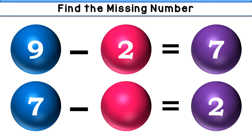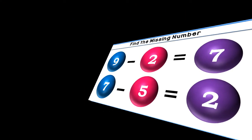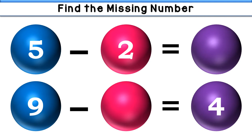The correct answer is 5. 7 minus 5 is equal to 2. Next: 5 minus 2 is equal to what? The answer is 3. 5 minus 2 is equal to 3. Now: 9 minus what is equal to 4?